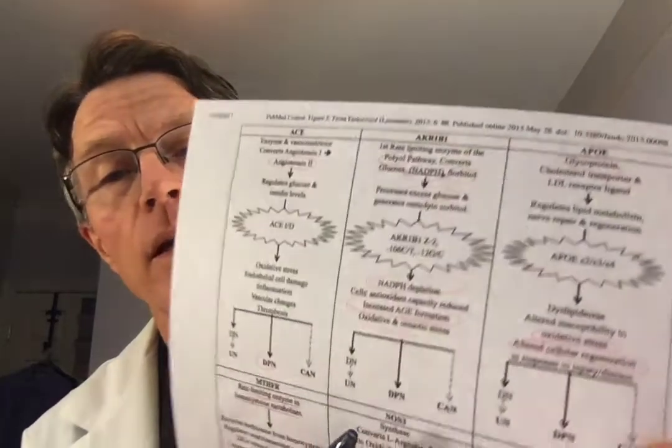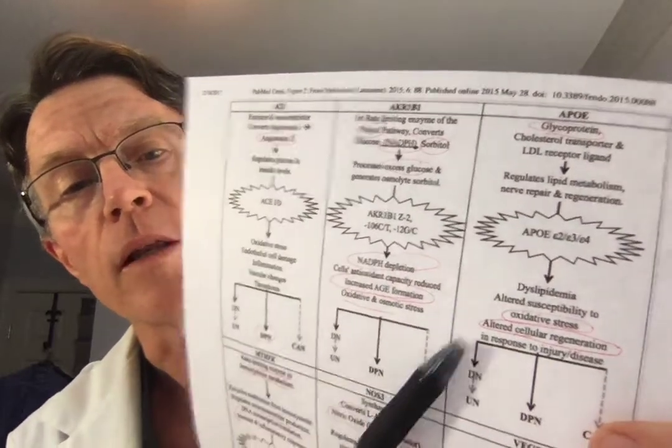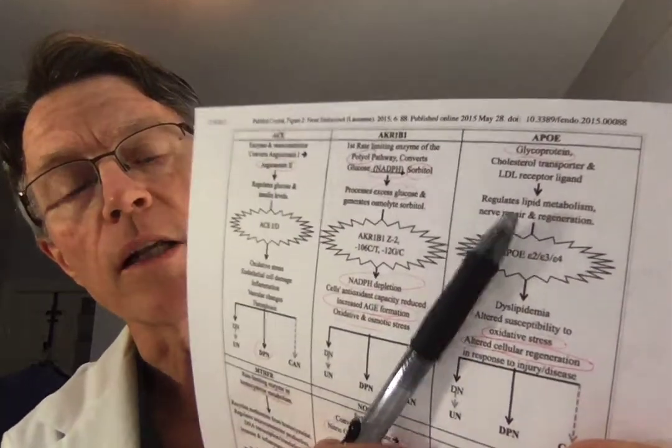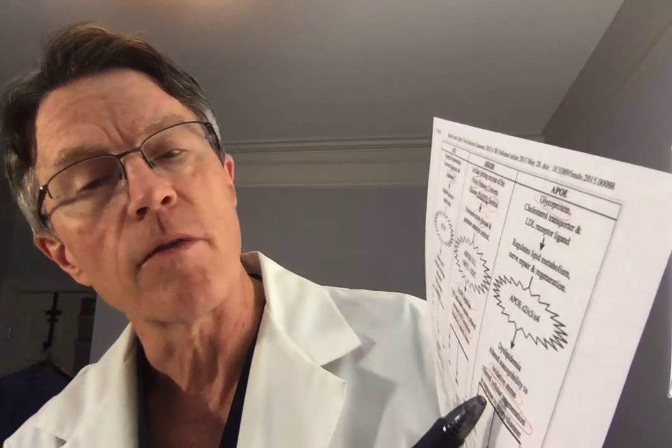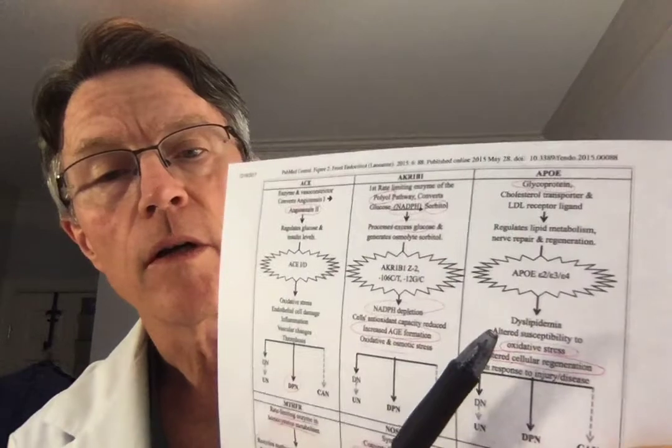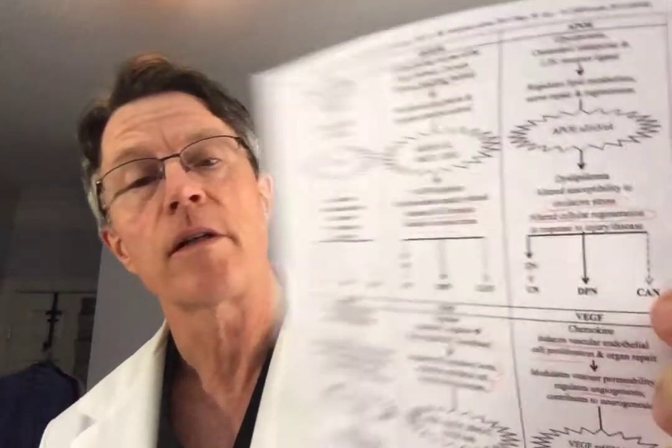ApoE is another genetic factor here, with ApoE4 being the biggest challenge. It's one of the genetics we look for routinely in our heart attack and stroke assessment. They repeat some points about oxidative stress and altered cellular regeneration.